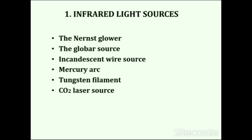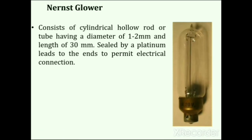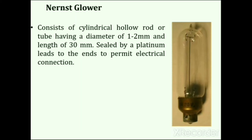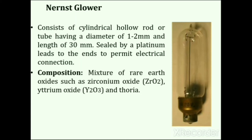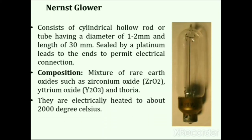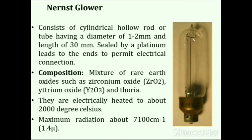Infrared sources consist of an inert solid electrically heated to a temperature between 1500 to 2200 K, which then emits infrared radiation. The Nernst glower consists of a cylindrical hollow rod or tube, 1 to 2 mm in diameter and 30 mm in length, sealed by platinum leads to permit electrical connection. It is composed of a mixture of rare earth oxides such as zirconium oxide, yttrium oxide and thorium oxide. When heated to about 2000°C, it generates IR radiation, providing maximum radiation at about 7100 cm⁻¹. Its lifetime depends on operating temperature and care in handling.